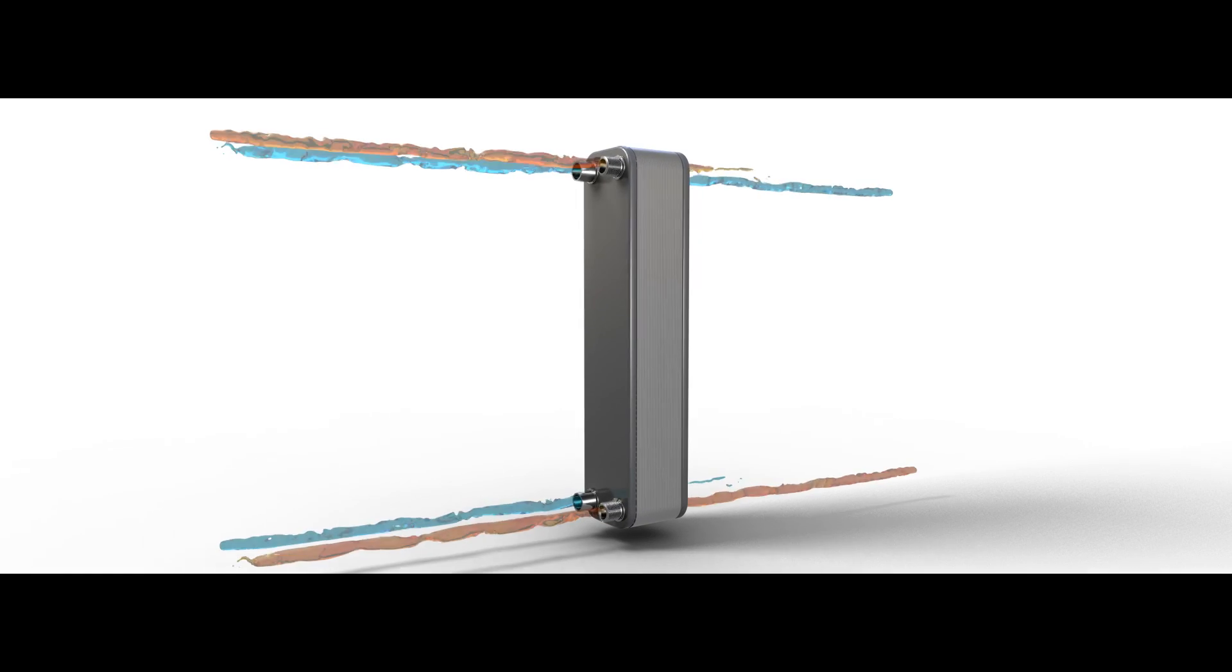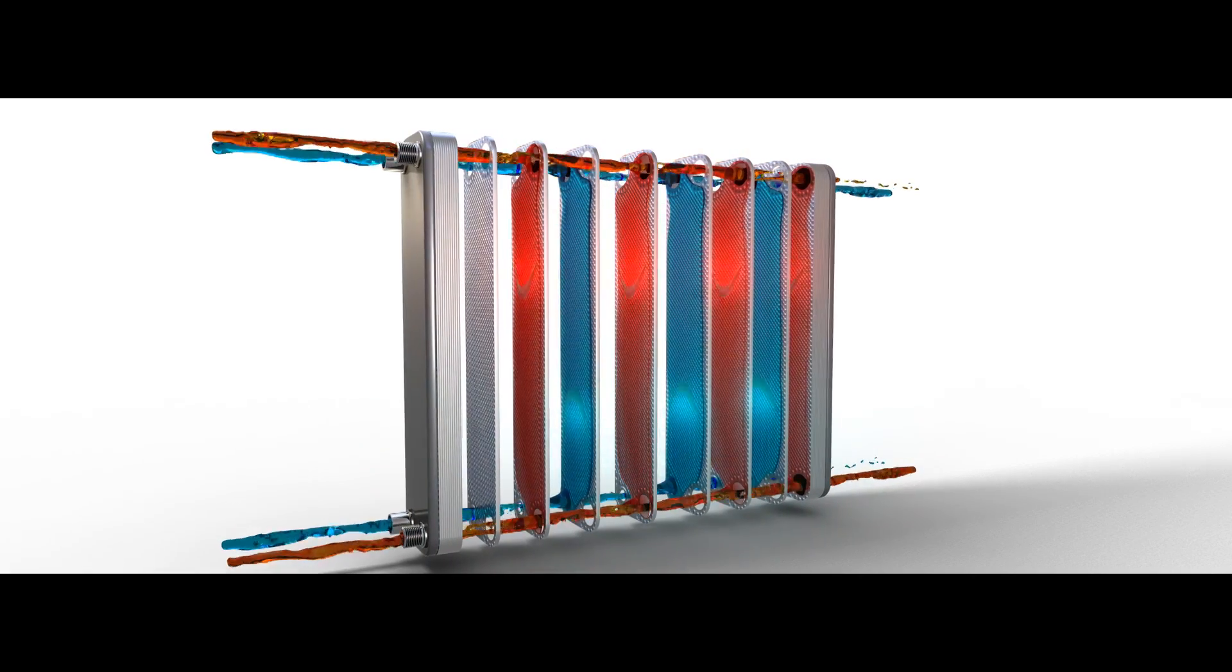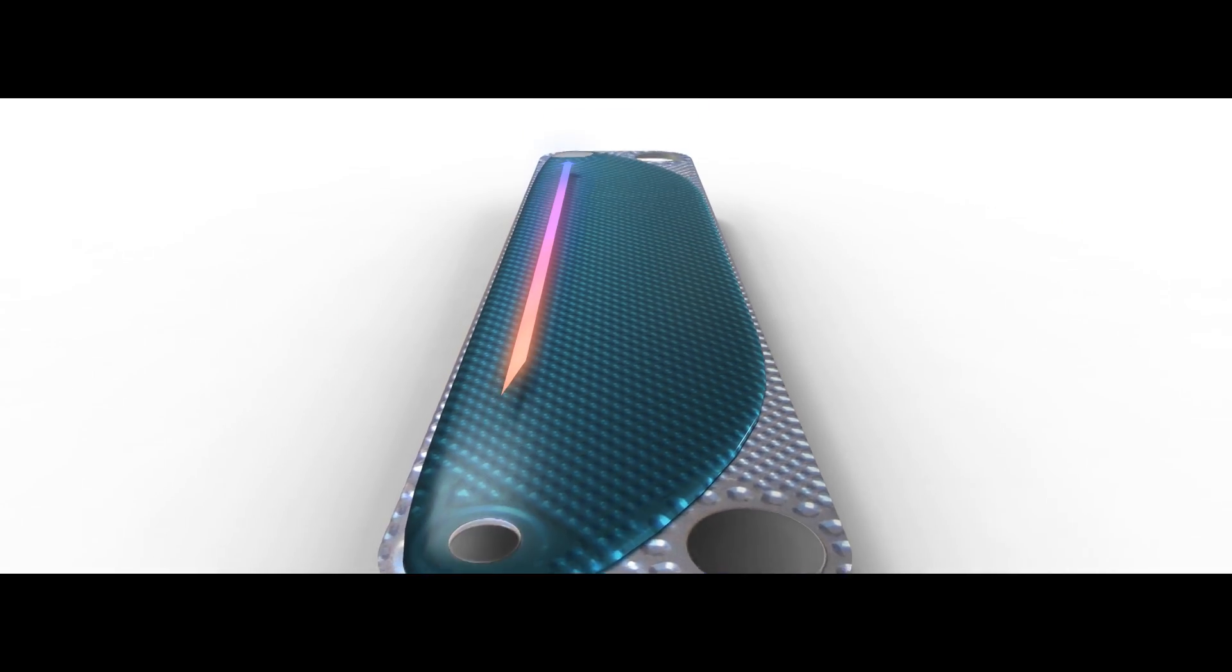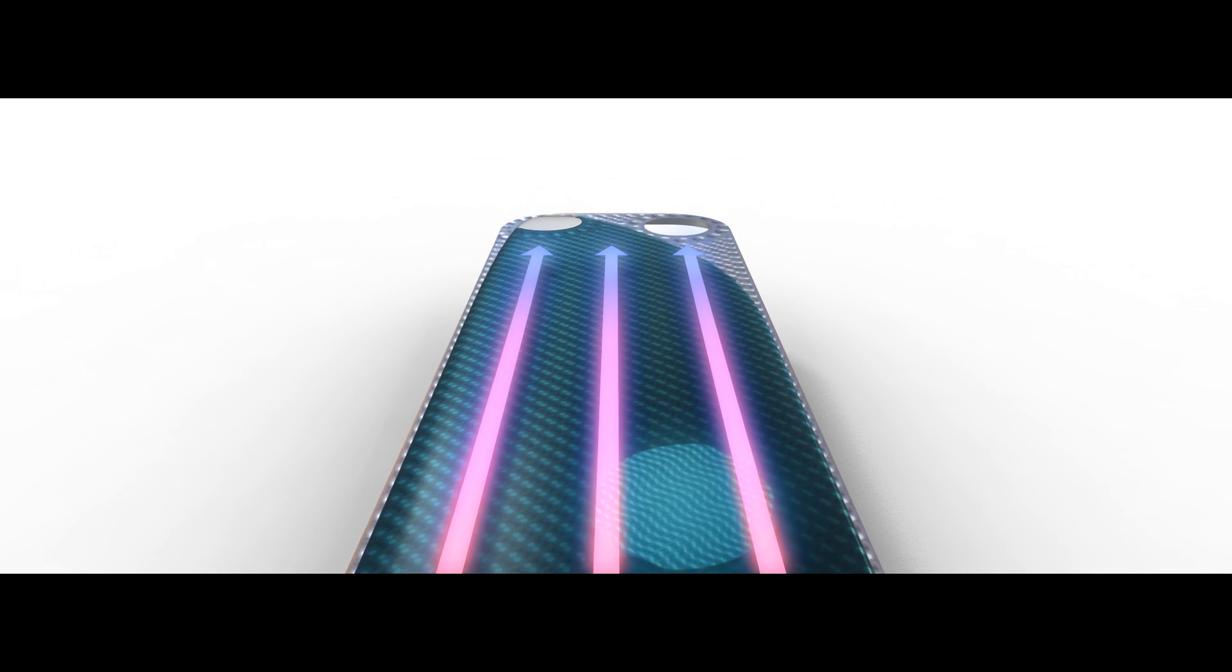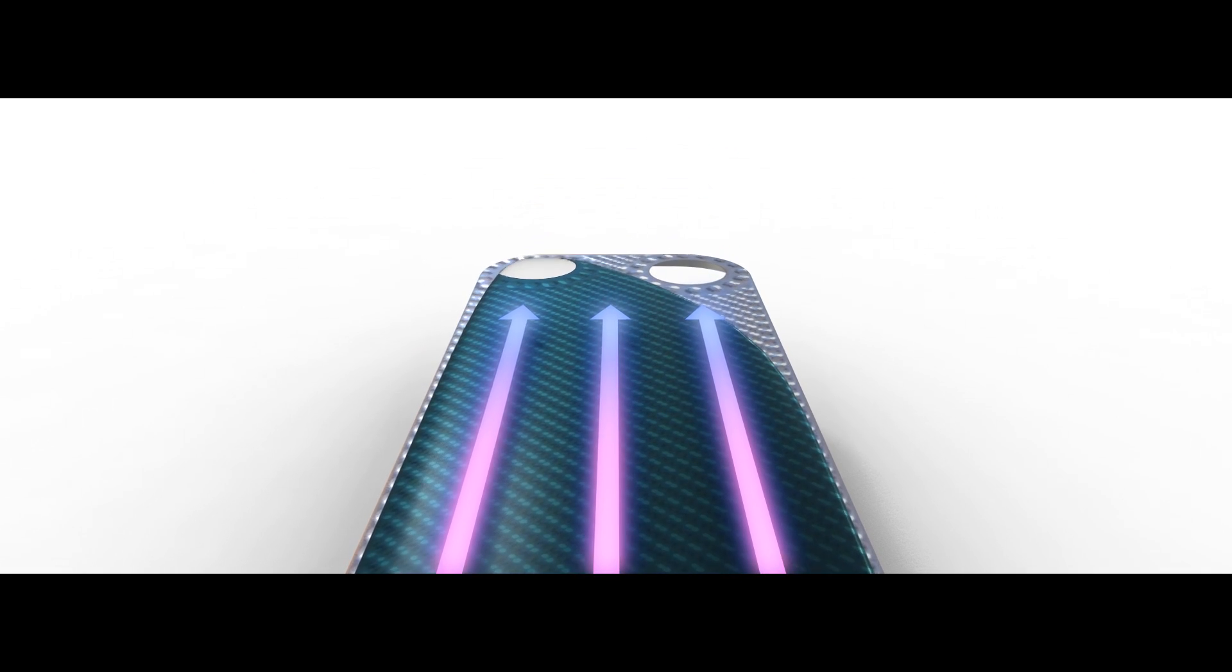Inside every heat exchanger there is a series of plates. Compared to traditional models, the water in a microplate heat exchanger flows over these plates more evenly, creating maximum turbulence and raising the rate of heat transfer.